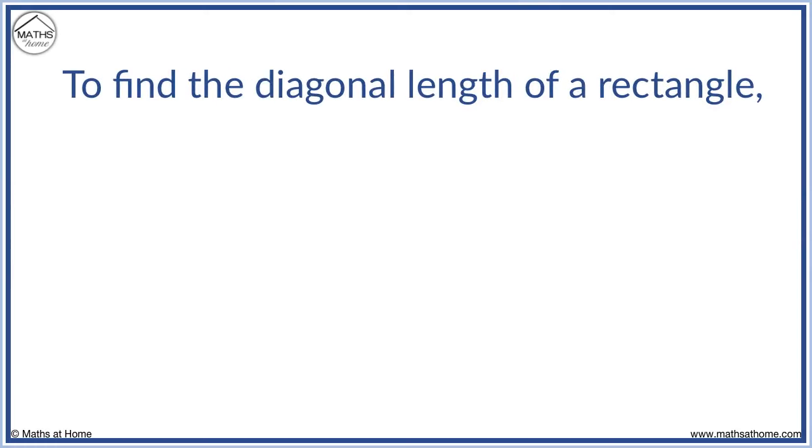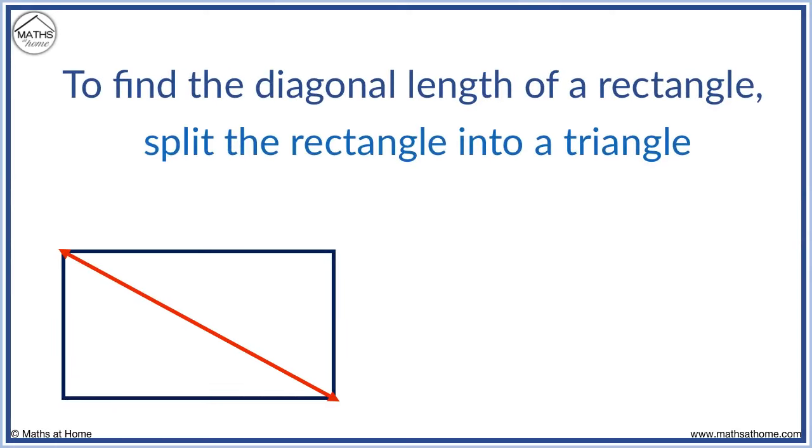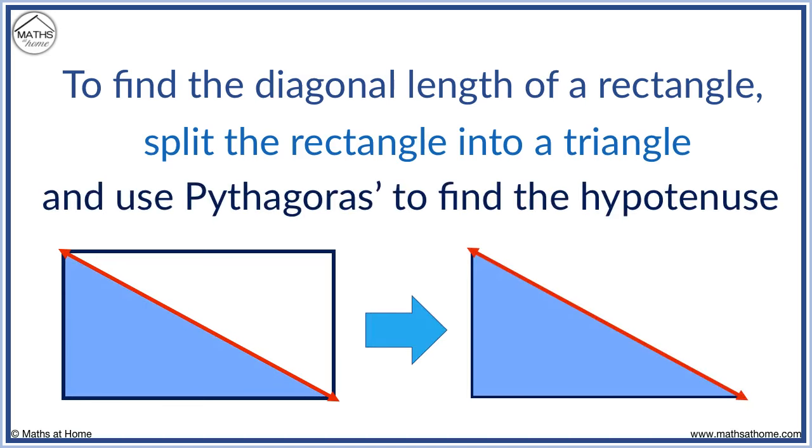To find the diagonal length of a rectangle, split the rectangle into a triangle and use Pythagoras to find the hypotenuse. The hypotenuse is the longest side of a right-angled triangle and it is the diagonal of our rectangle. We find its length with c equals the square root of a squared plus b squared.